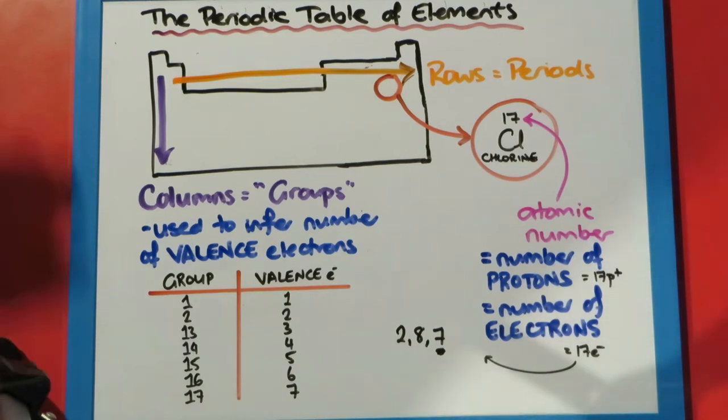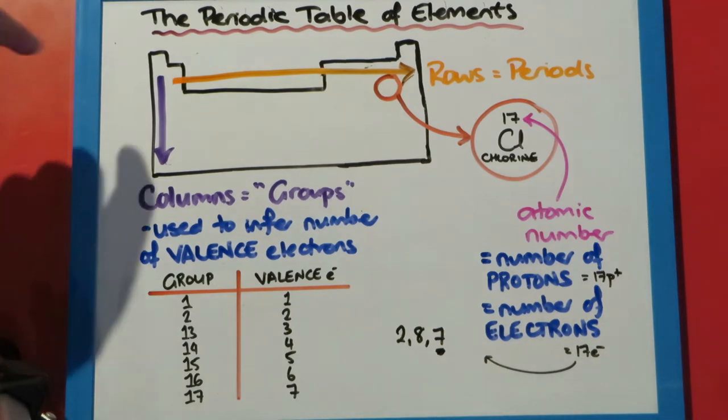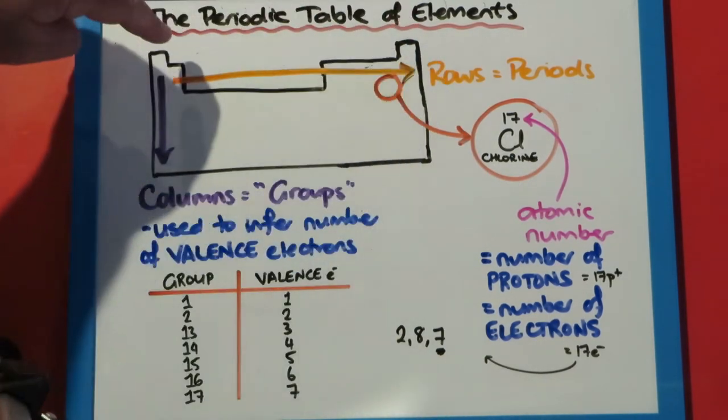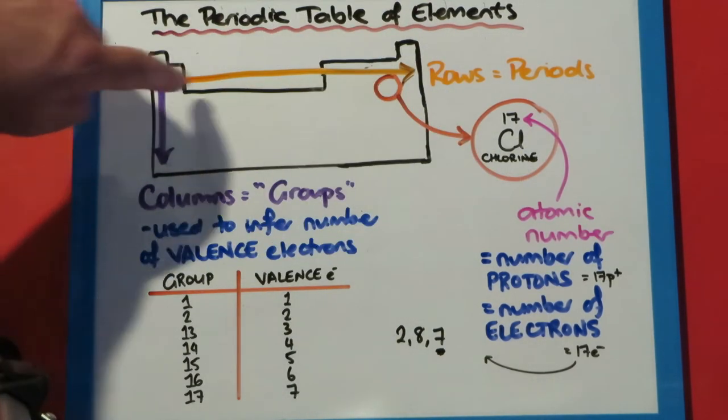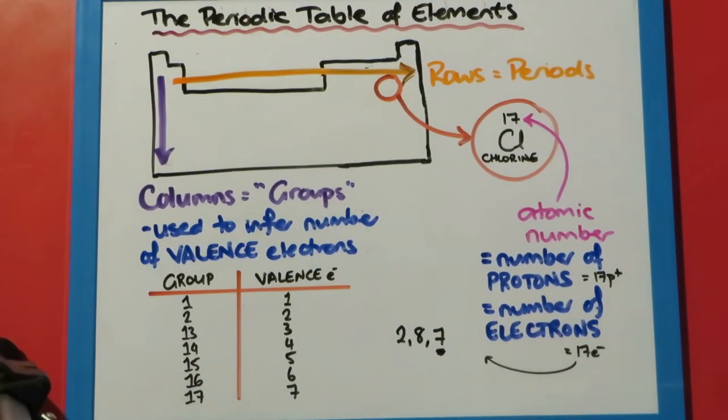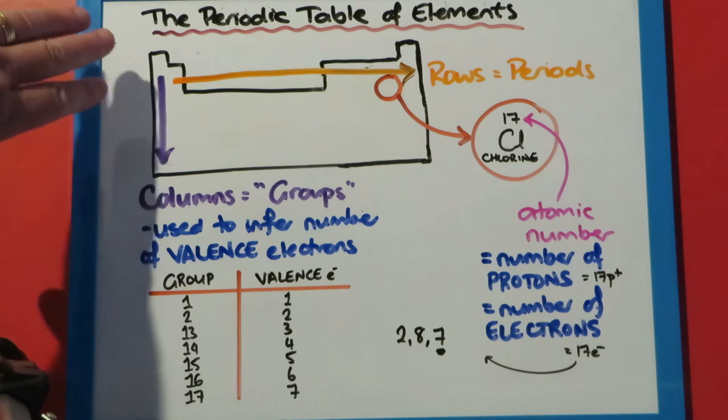The other thing you'll notice it's organized into is rows that go across. They're not all the same. This one's only got two atoms, this one's only got 10, the next one's only got 10, and then they've got 18. These rows are called periods, hence the periodic table.